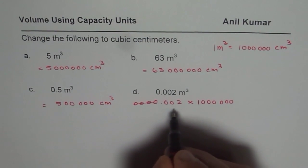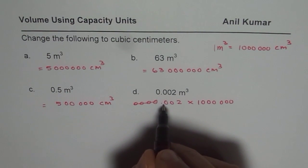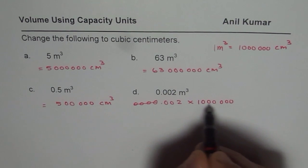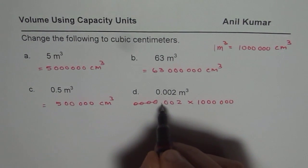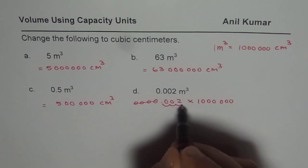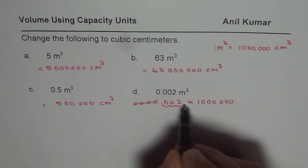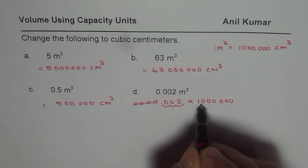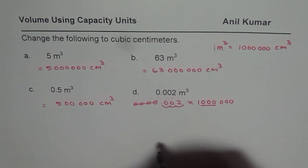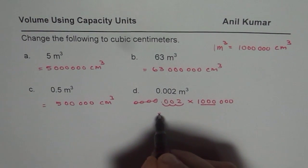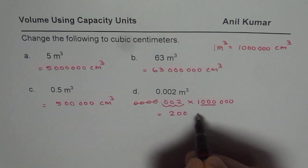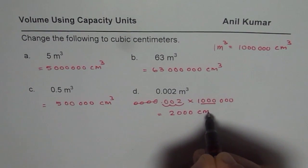We have 0.002. We need to get so many zeros. Let's move 1, 2, 3—if you move 3 decimal places, you get 2. That takes care of 3 zeros. Therefore, the answer equals 2,000 centimeter cube.